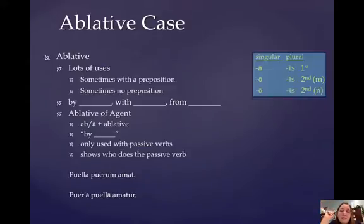Now, this first specific use of the ablative that you're going to learn is called the ablative of agent. The way that it works in Latin is that you use the preposition a-ab. Of course, you use a-ab if the next word begins with a vowel, a if it begins with a consonant, plus the ablative case, of course, because it's the ablative of agent.